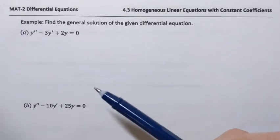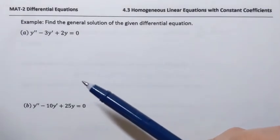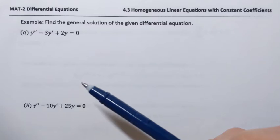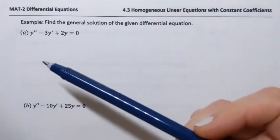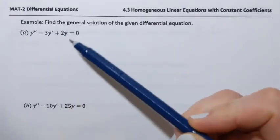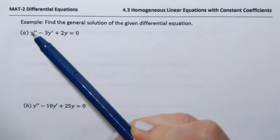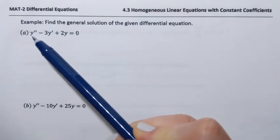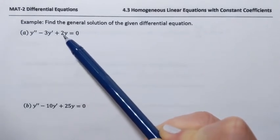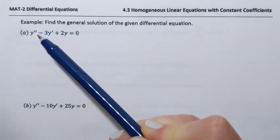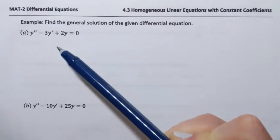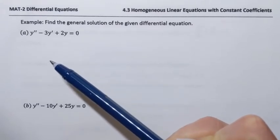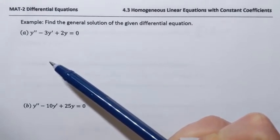We're going to solve three second-order homogeneous linear equations with constant coefficients. So that's our first example. Notice it's second order, and all coefficients are constants: 1, negative 3, positive 2. And that's linear and homogeneous.